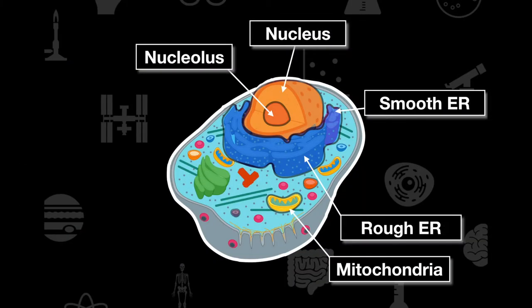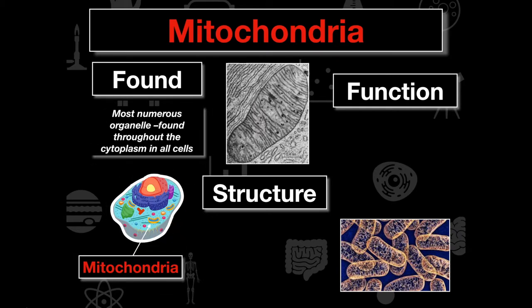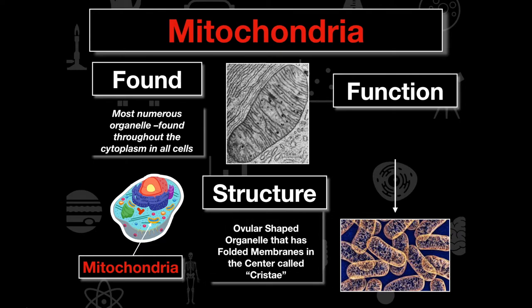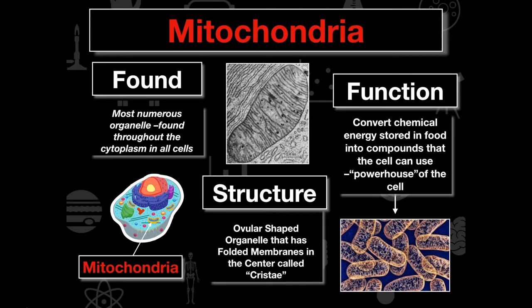The next organelle is the mitochondrion — the powerhouse of the cell. It is the most numerous organelle found in the cytoplasm of all cells. Its structure is an ovular shaped organelle that looks similar to bacteria, and it has folded membranes inside called cristae. Its function is converting chemical energy in food into energy the body can use — specifically taking glucose and converting it into ATP. The mitochondria is really important because it gives us all the energy within our body.